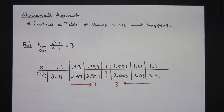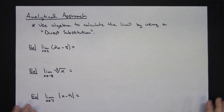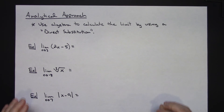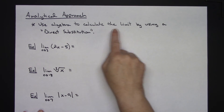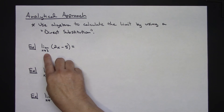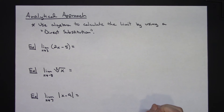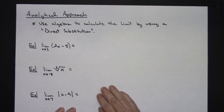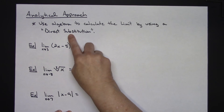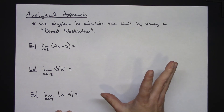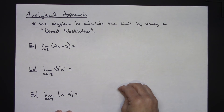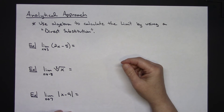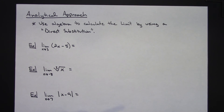The last approach is the analytical approach — this is like a very brief introduction, so everything will work out nice and neat. You use algebra to calculate the limit via direct substitution: take your value and directly substitute it in and do a bit of algebra to get your answer. Later on, when you try direct substitution, you may get something like zero over zero — an indeterminate form — but this video won't cover how to handle those cases.